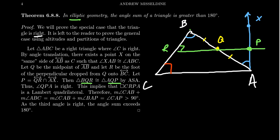By the choice of Q, segment BQ is congruent to AQ. Angle RQB is congruent to angle AQP because they are vertical angles. By construction, angle B is congruent to angle A. So by SAS, triangles BQR and AQP are congruent. Looking at corresponding parts, angle BRQ corresponds to angle APQ, giving us a right angle at P. So the triangle we constructed is a right triangle.